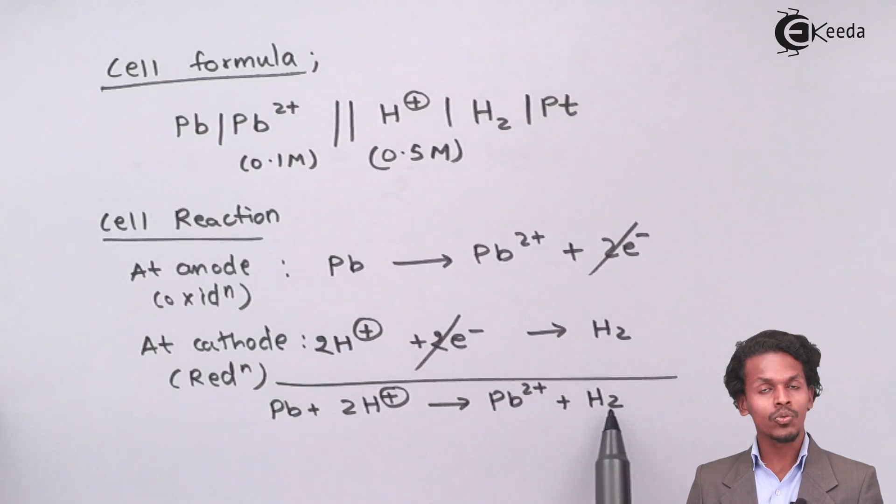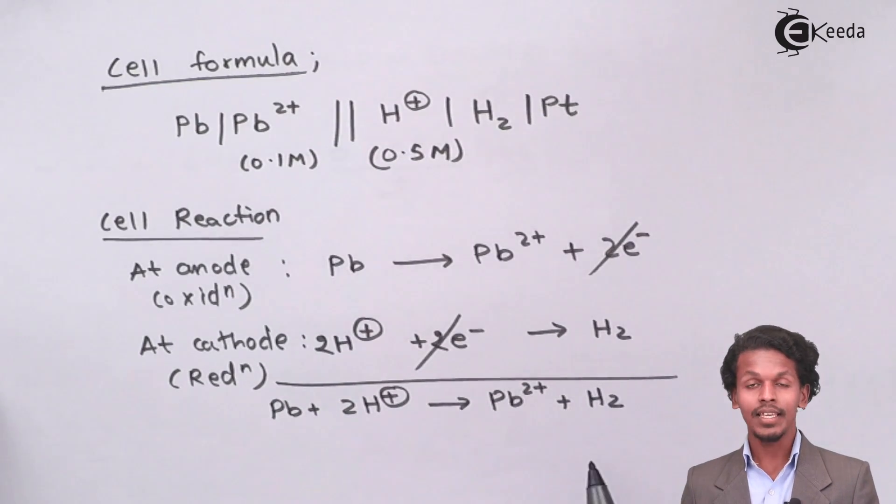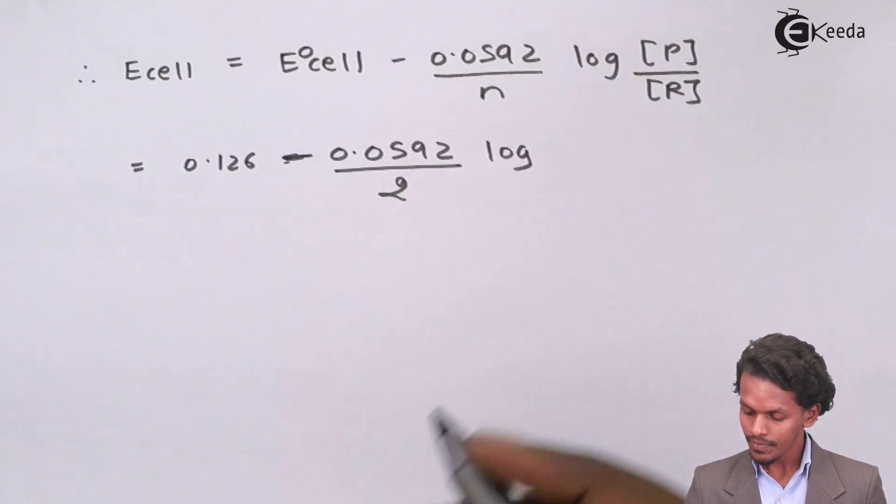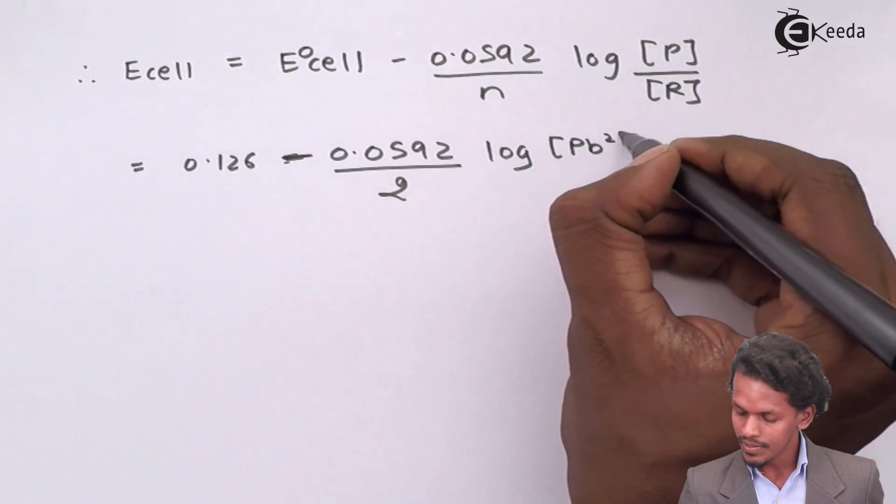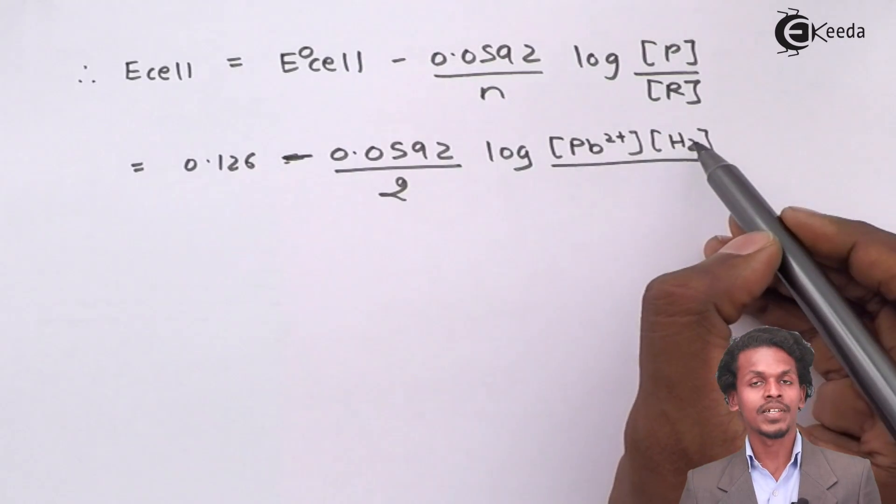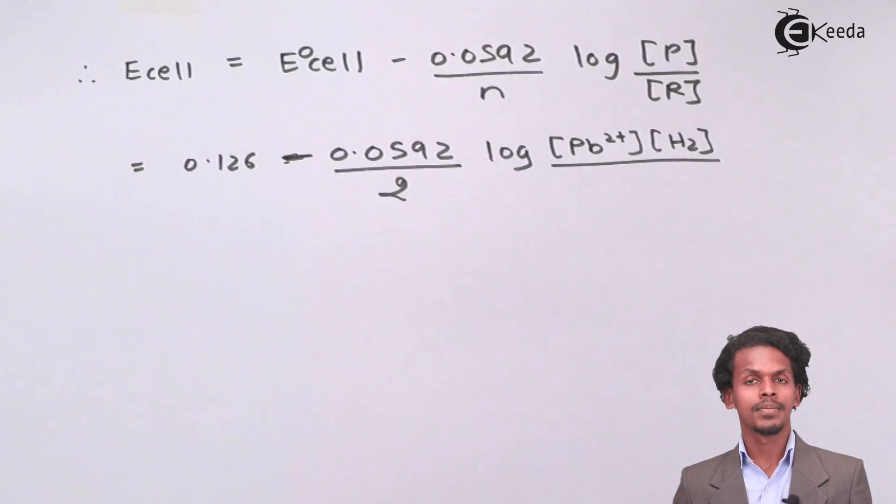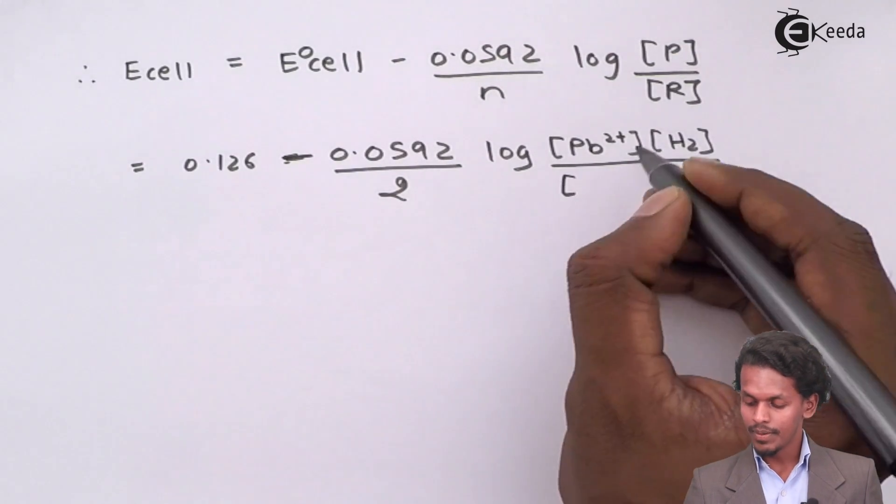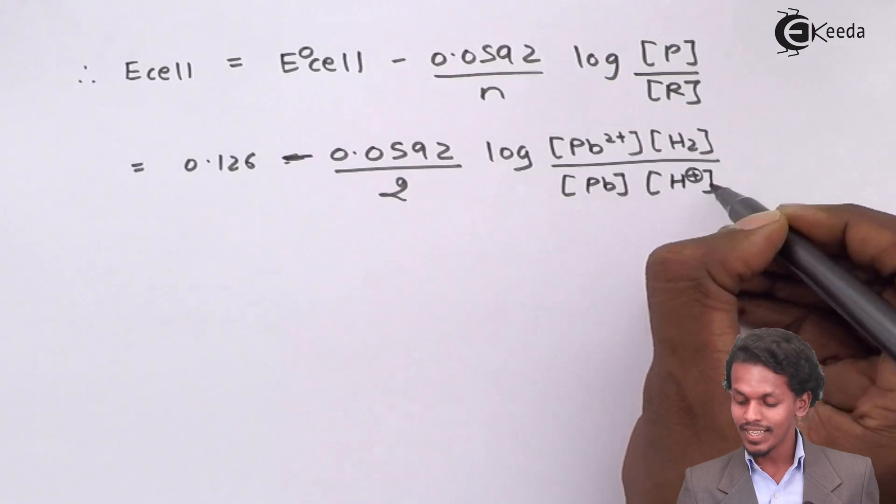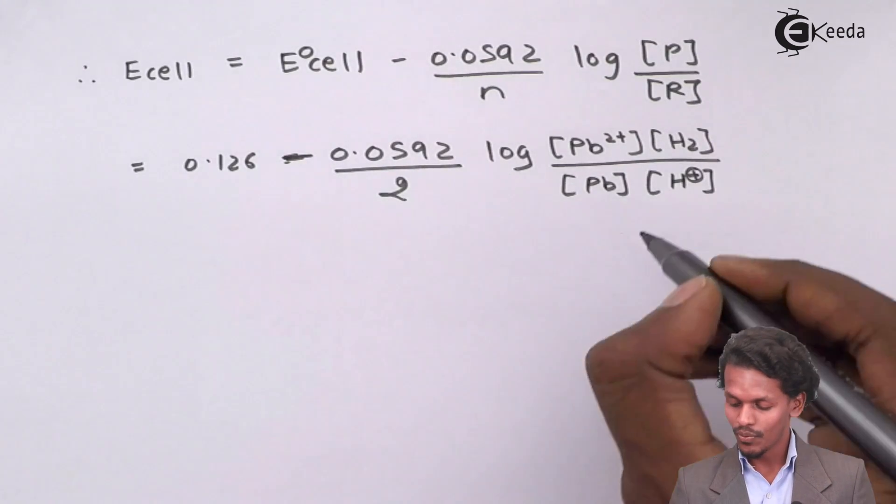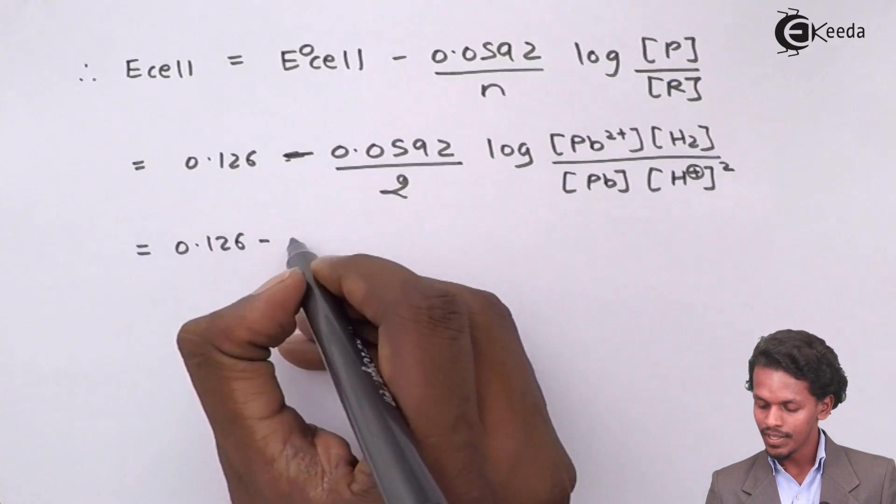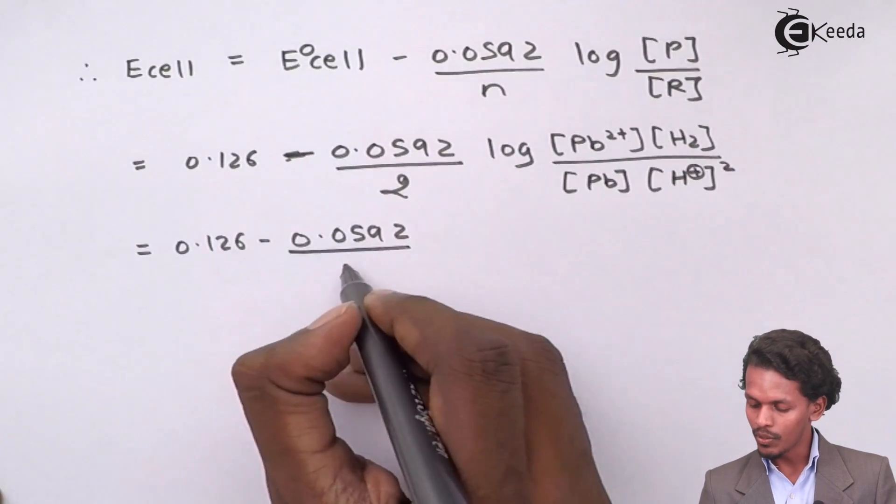Let me give you a short glimpse of what we did and how we estimated the products and reactants. Pb2 plus and H2 are both the products, and the pressure of hydrogen was 2 atm, so this should also be in consideration. Therefore, Pb2 plus and H2, since it is present in gas, it will exhibit a pressure, divided by the reactants.